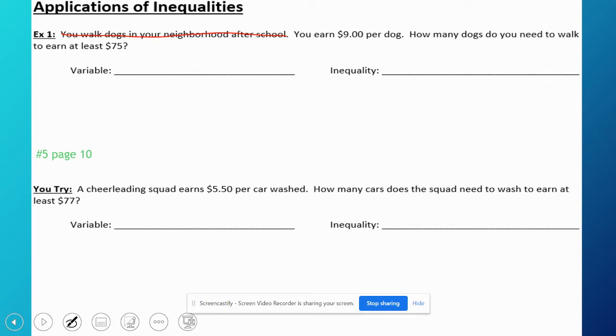any dog that you walk. How many dogs do you need to walk to earn at least $75? That means I could earn $75, I could also earn more. So I'm just going to call d my variable for dogs. You earn nine dollars per dog, that means nine times the number of dogs has to be greater than or equal to the amount of money. Simple inequality, divide by